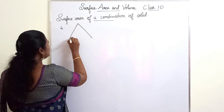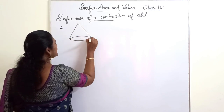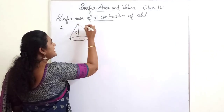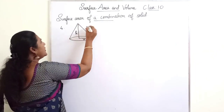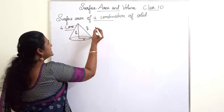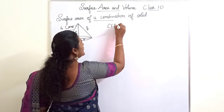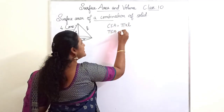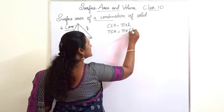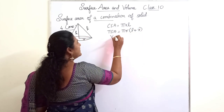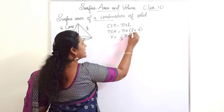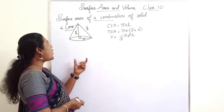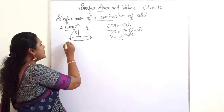Now we have cone. If the radius of the cone is R, the height is H, and L is the slant height, then the CSA of the cone is πRL. The TSA formula is πR(L plus R), and the volume formula is (1/3)πR²H. Since the height is perpendicular to the radius, we call this a right circular cone.